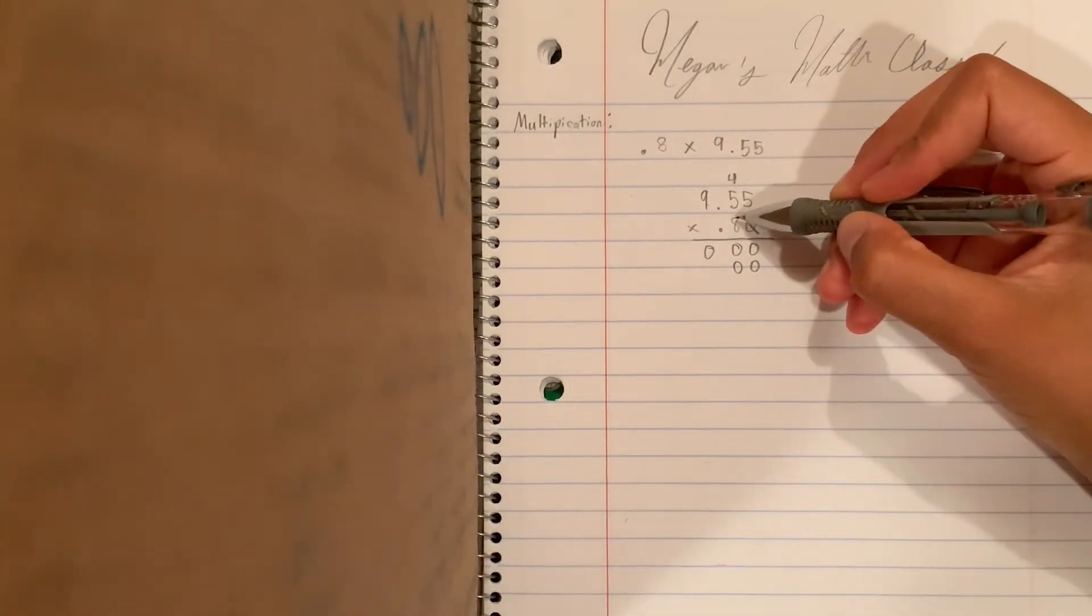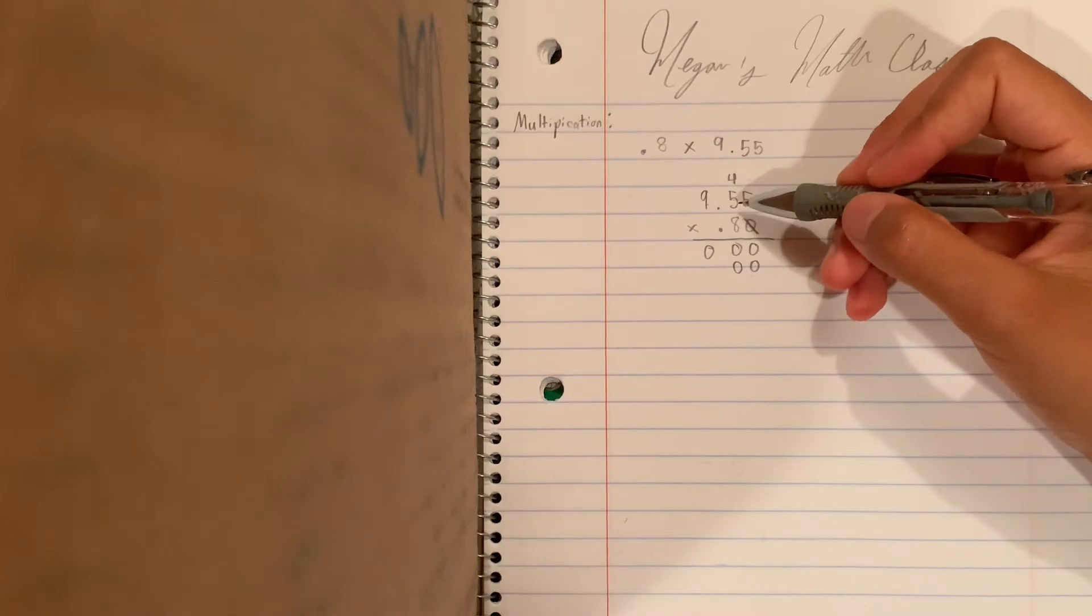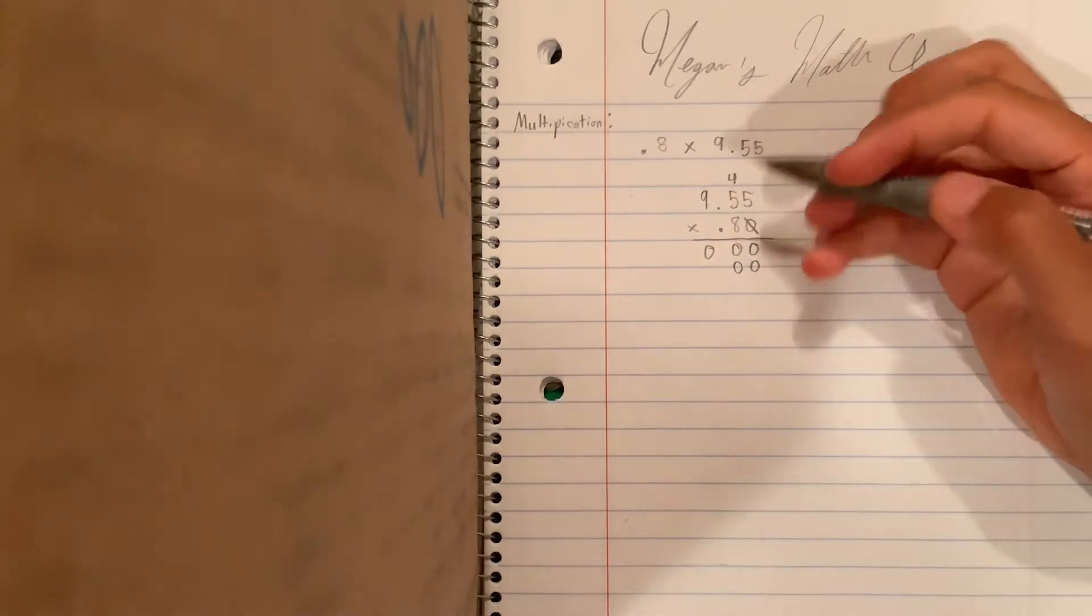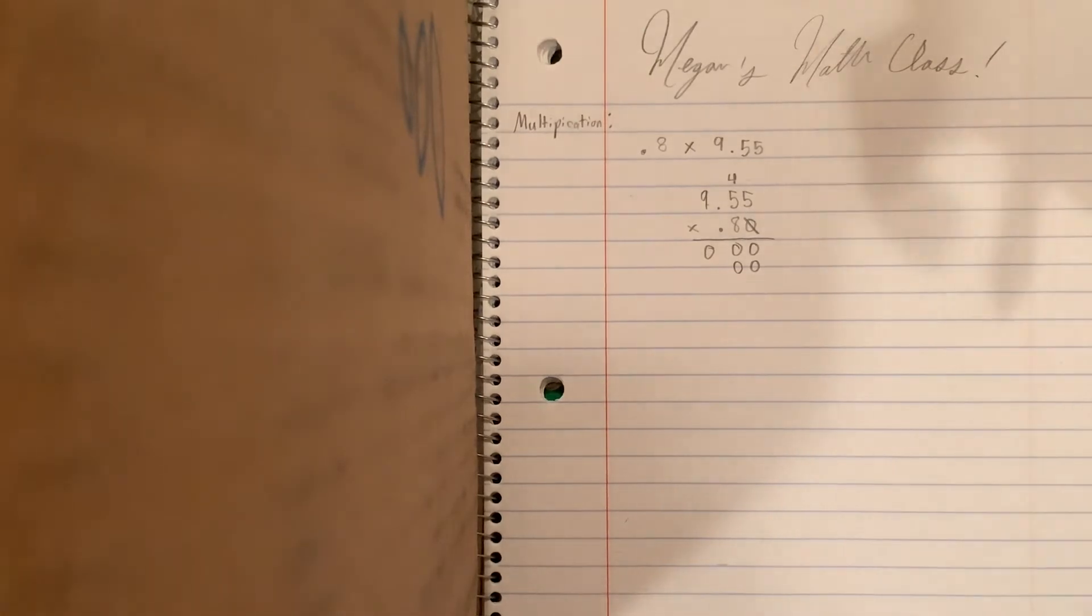And then, 8 times 5 is 40 again. And but, we gotta remember to add this 4. You gotta add that 4 right here.